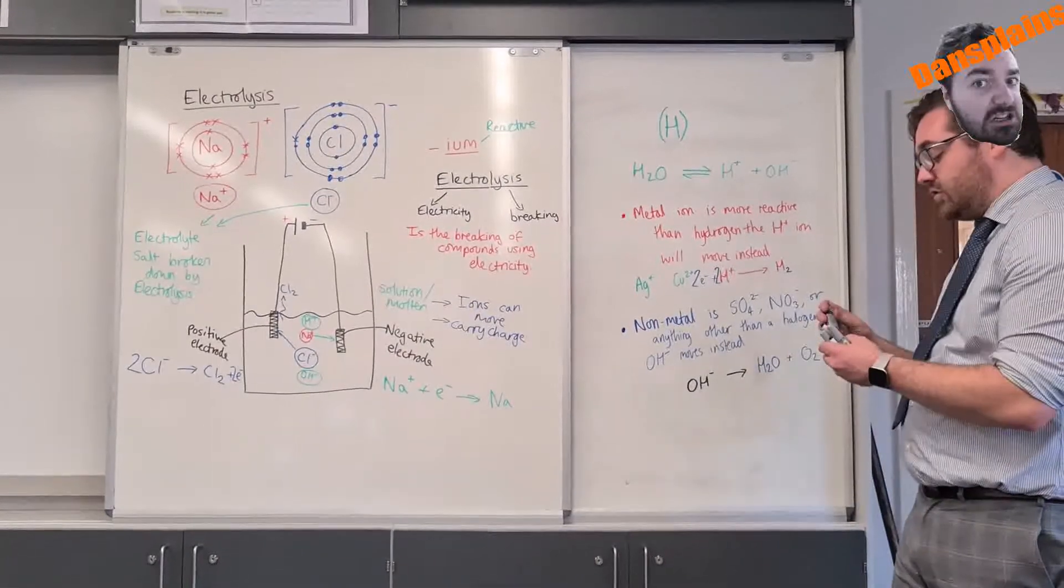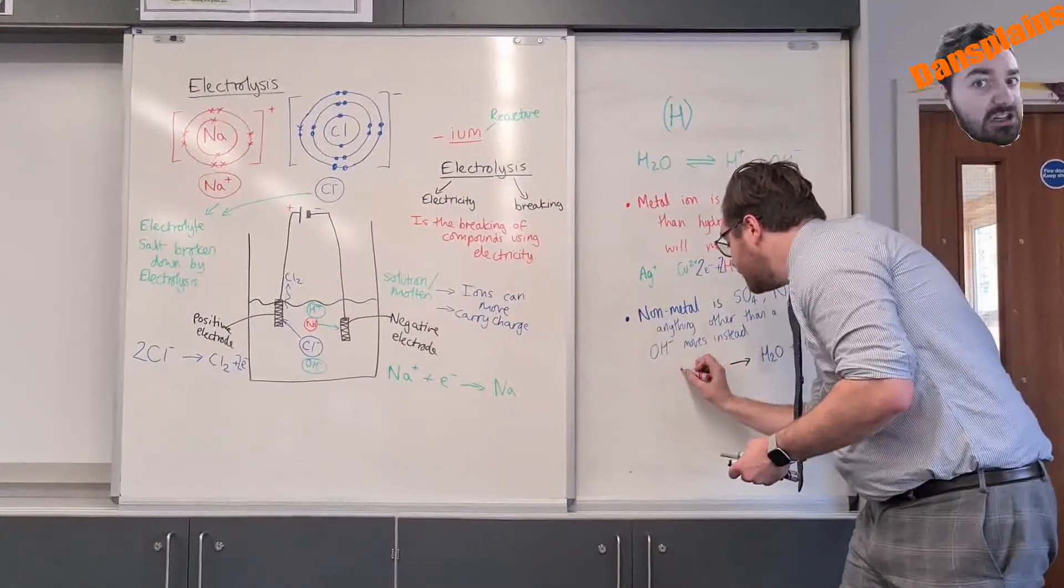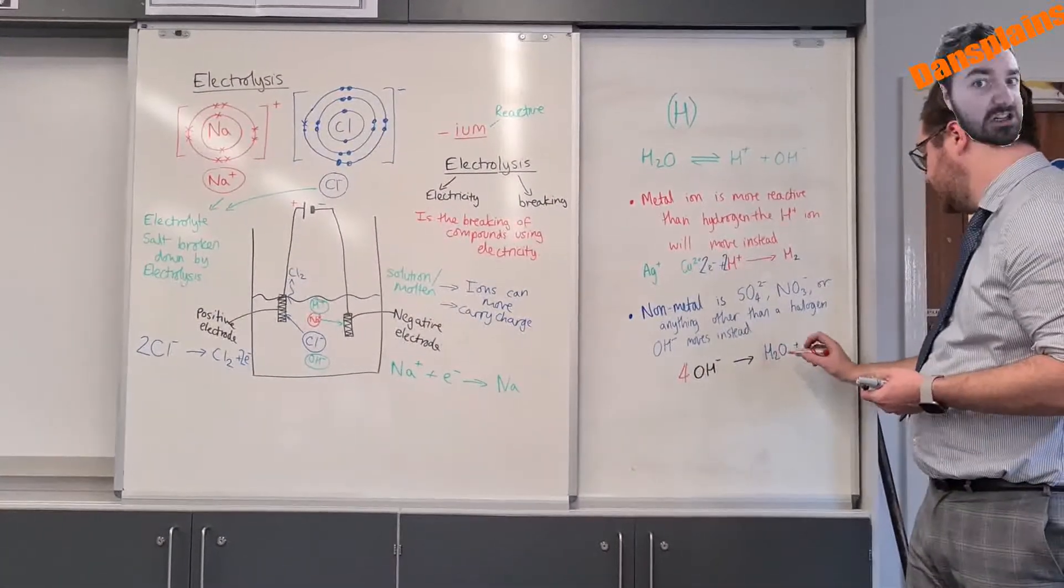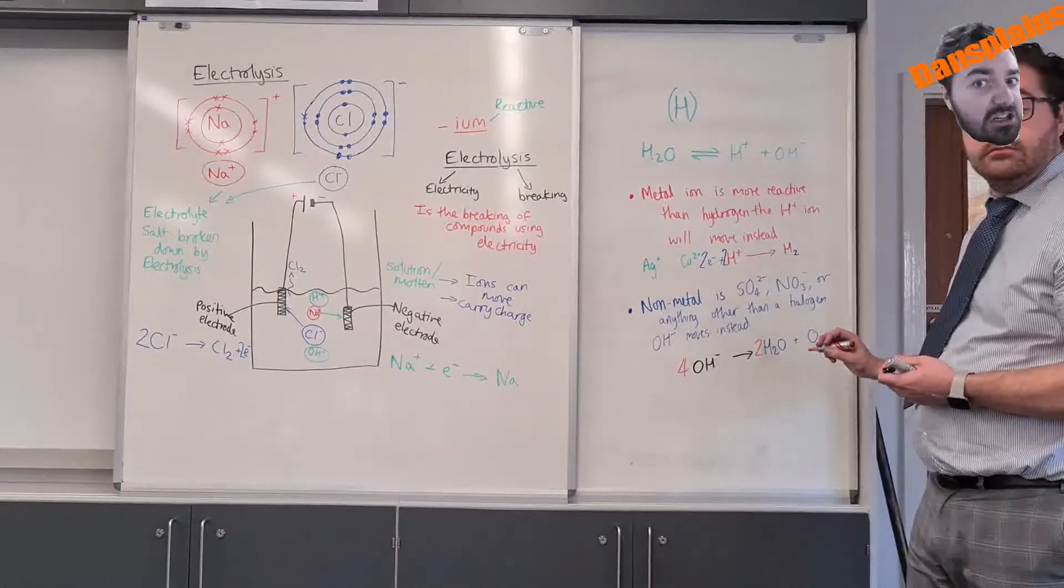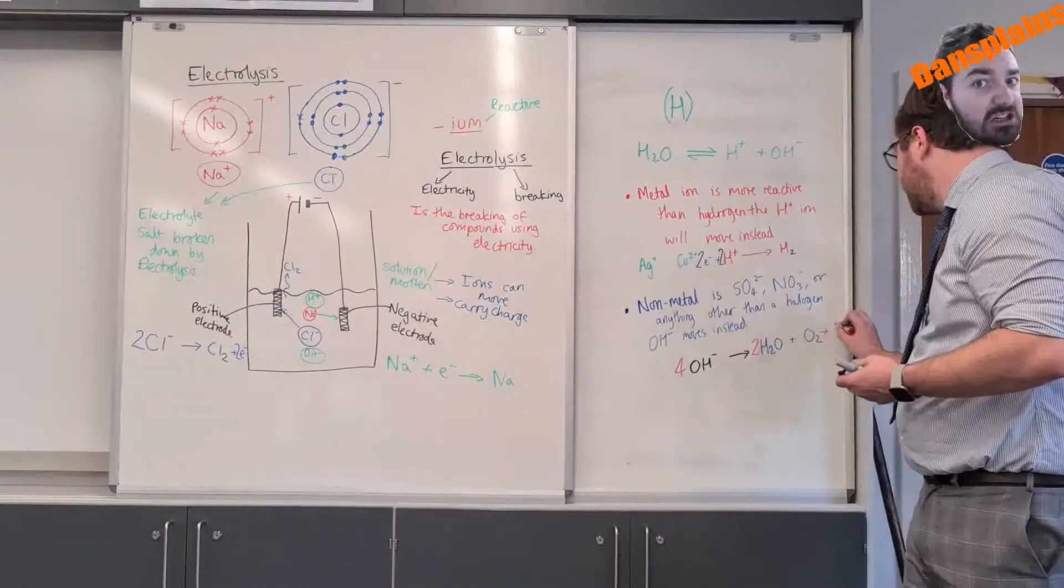So in this situation I have to balance that and the only way to balance it is 4OH- plus 2H2O and O2. That will also make four electrons.